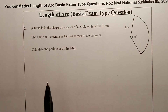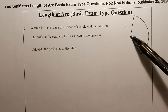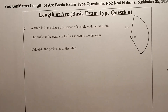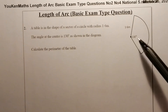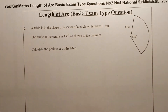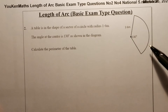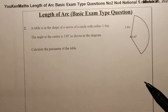For question two, we have a table in the shape of a sector of a circle with a radius of 1.6 meters. The angle at the center is shown as 130 degrees and we have to calculate the perimeter. This type of question doesn't tell you it's a length of arc question in the exam, but when you see a perimeter involving a curved edge, it's going to be a length of arc type of question.